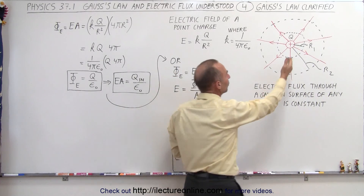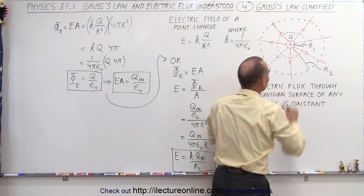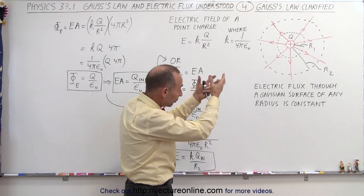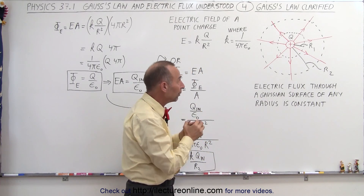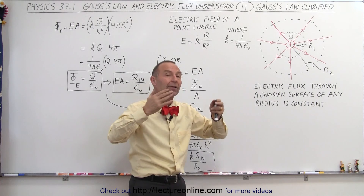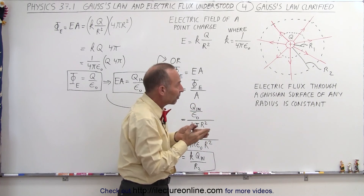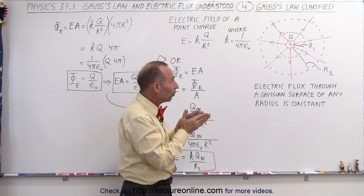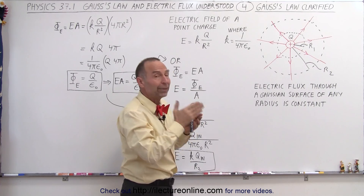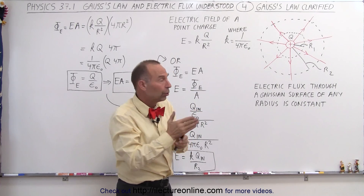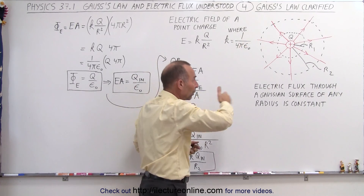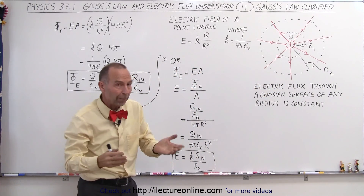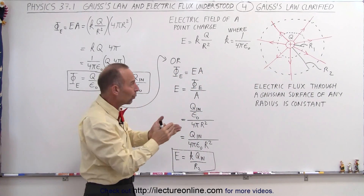We have one with radius R1 and another one of radius R2. We also realize that any charged object, like Q, will have an electric field around it, and that electric field can be represented by electric field lines, which will emanate perpendicular to the charge — in a radial direction outward — in all different directions, represented by those red arrows.